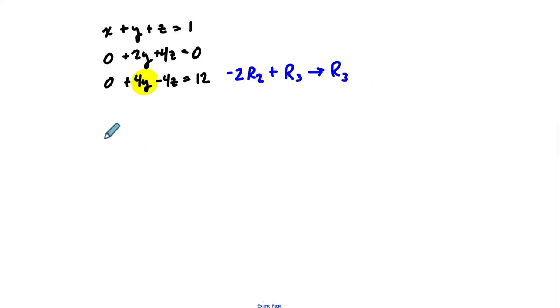So I'll show you what I mean. The first row is untouched. I have x plus y plus z equals 1. The second row, I'll leave it alone. 2y plus 4z equals 0. We could cut everything in half there, but I'll show you here that we have a solution. So negative 2 times everything in the second row and then add to the third. So 0 times negative 2 plus 0 is 0. 2y times negative 2 is negative 4y, plus 4y is 0. And then negative 4z times negative 2 is negative 8z, plus negative 4z is negative 12z. And then 0 times negative 2 plus 12 is just 12.